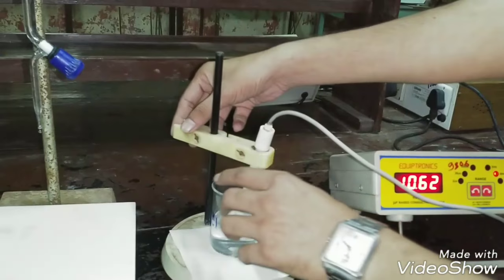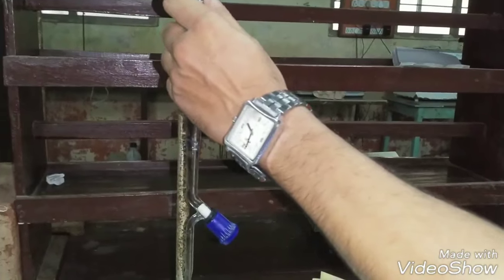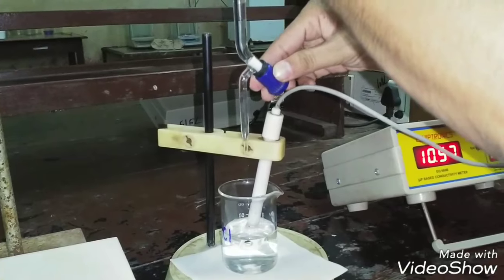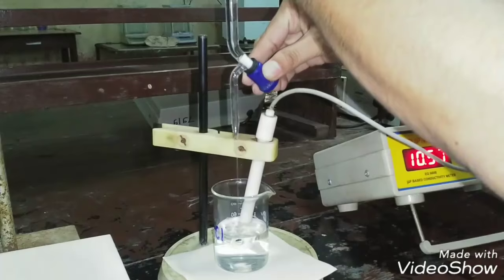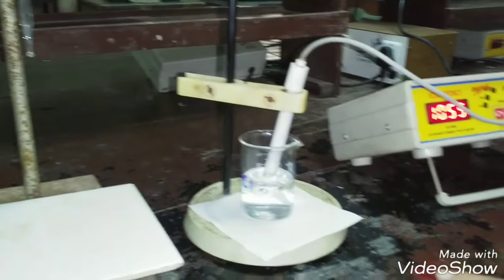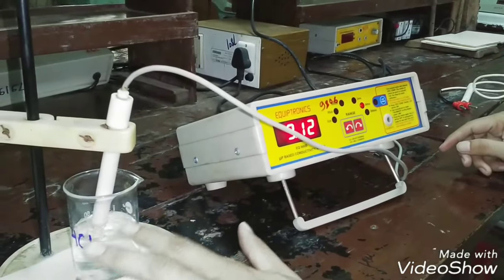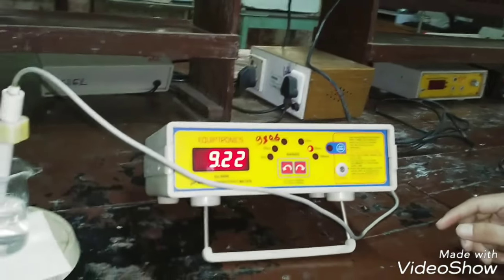Now, when we add strong base that is NaOH which is taken in the burette to the HCl solution, the acid-base neutralization reaction takes place. During the neutralization reaction, when we add NaOH solution to acid solution, from the HCl solution, fast moving H+ ion is replaced by slow moving Na+ ions and due to which conductivity starts decreasing.